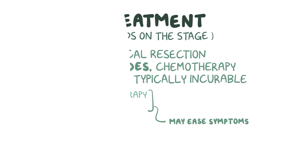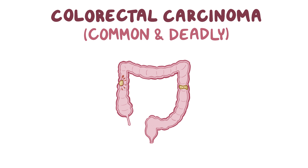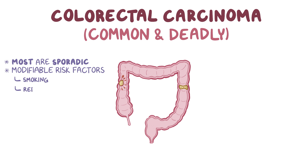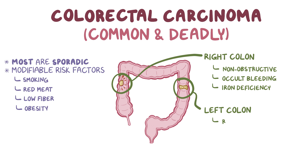As a quick recap, colorectal carcinoma is a very common and deadly cancer that affects the large intestines. The majority of cases are sporadic and do not have a clear cause, but modifiable risk factors include smoking cigarettes, eating a lot of red meat, not eating a lot of fiber, and being obese. Symptoms can vary based on the tumor's size and location. Tumors of the right colon generally don't cause bowel obstruction and instead can cause occult bleeding, which can lead to iron deficiency anemia. Tumors of the left colon, on the other hand, are generally ring-shaped masses, which can cause bowel obstruction with constipation as well as abdominal pain.